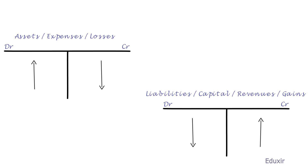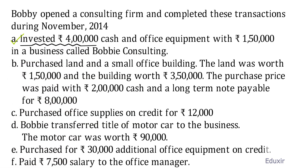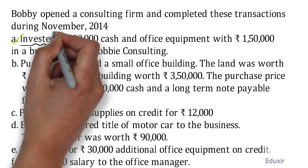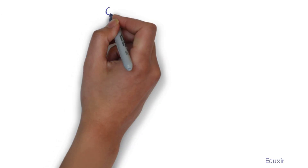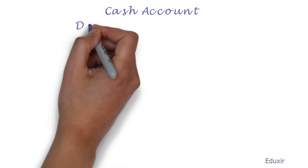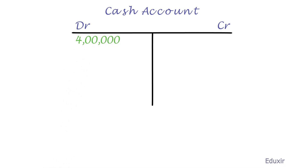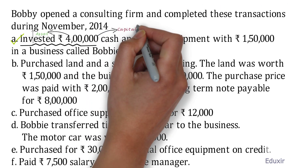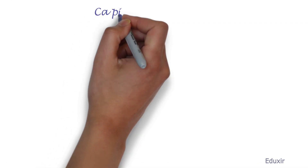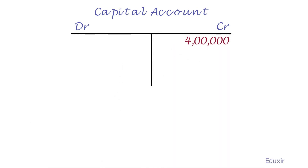Now let us analyze each transaction one by one. In the first transaction, Bobby has invested 4 lakh rupees into the business, so there is an increase in the asset. The rule to record an increase in an asset is to debit the corresponding asset account — in this case, the cash account. Let us prepare the T account for cash. We need to add 4 lakh rupees on the debit side. At the same time, as this is cash brought into the business by the owner, it increases the owner's equity or capital. The rule to record an increase in capital is to credit the capital account. Let us prepare the T account for capital. We need to add 4 lakh rupees on the credit side of the capital account.